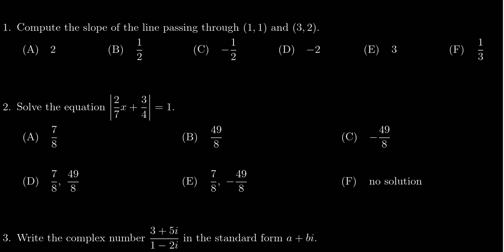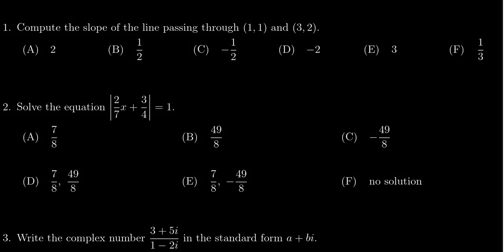In this video we provide the solution to question number one from practice exam number two for Math 1050. We're given two points (1,1) and (3,2) and we're asked to find the slope of the line passing through these points.